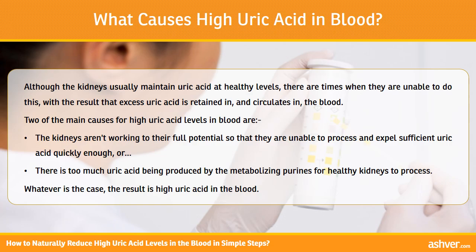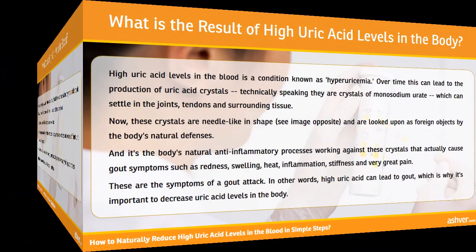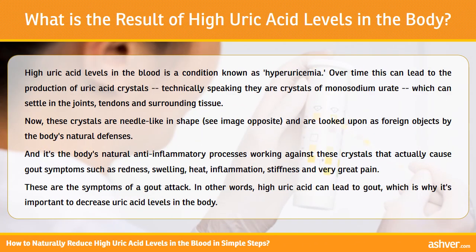Whatever is the case, the result is high uric acid in the blood. High uric acid levels in the blood is a condition known as hyperuricemia. Over time this can lead to the production of uric acid crystals — technically speaking, they are crystals of monosodium urate — which can settle in the joints and tendons and surrounding tissue.